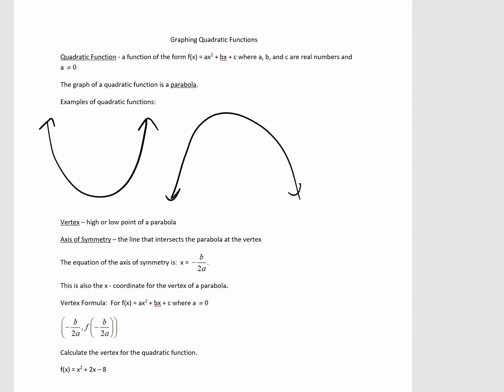So, the vertex is the high or the low point of a parabola, and the axis of symmetry is the line that intersects the parabola at the vertex. So, let me include both of those in our pictures above.